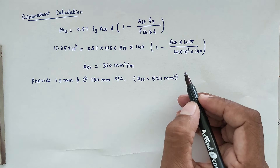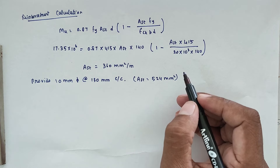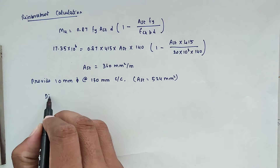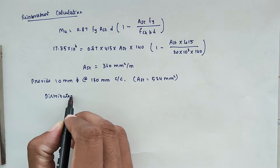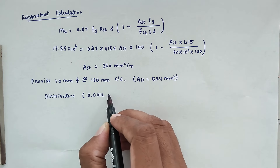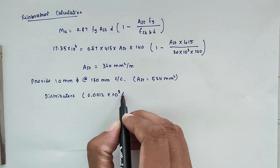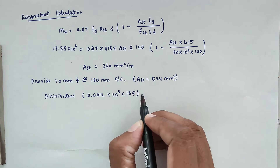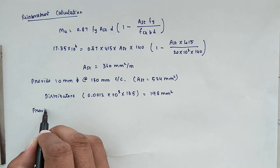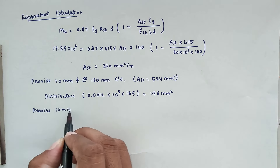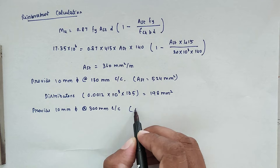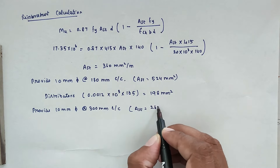Now distribution reinforcement: distribution steel equals 0.12% into b × D, where b equals 1000 and D equals 165 mm (overall depth), giving 198 mm². Provide 10 mm dia bars at 300 mm center to center, giving Ast equals 262 mm².